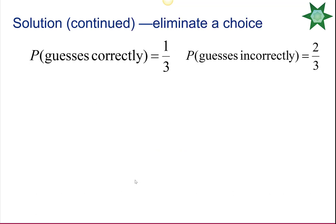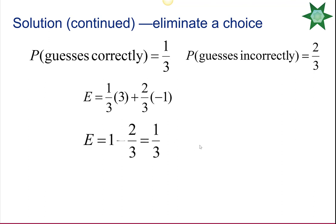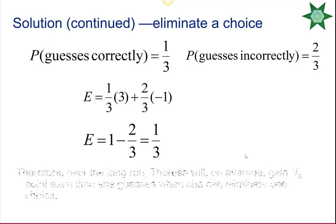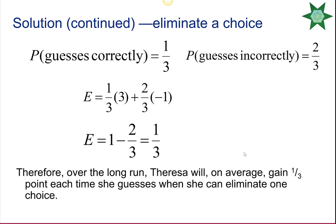If Teresa can eliminate one answer, there are only three choices left. Now the probability of being correct is 1/3 and incorrect is 2/3. Expected value = (1/3)(3) + (2/3)(−1) = 1/3. In the long run it is definitely to her advantage to guess, as she gains an average of one-third of a point each time she guesses when she can eliminate one choice.